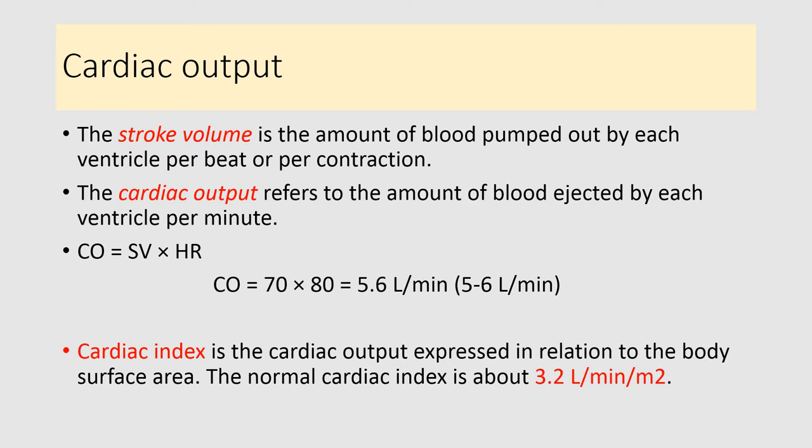The cardiac index is cardiac output expressed in relation to body surface area. In simple terms, cardiac index is cardiac output per body surface area. The normal value of the cardiac index is about 3.2 liters per minute per meter squared. You must remember all these definitions because they are helpful in your study as well as in exams.